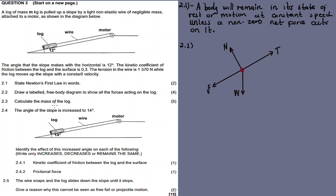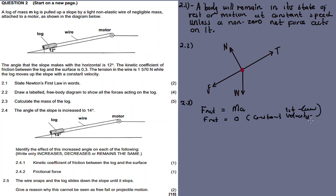For 2.3, calculate the mass of the log. For this one we apply Newton's First Law. F net equals mass times acceleration. Since this is the First Law scenario, the acceleration is zero because there is a constant velocity. It means that the net force is equal to zero.